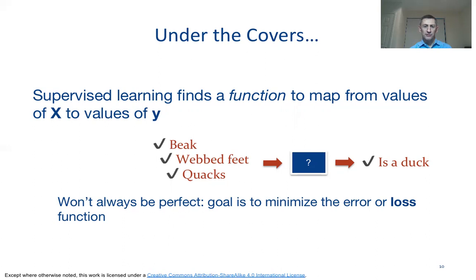Having a perfect function that will perfectly map our data features into output variables without making any mistake is challenging in practice. Typically, we will not be able to be perfect in this classification. Rather, we will define some sort of error function or loss function, and then try to find the mapping function which minimizes that loss or error as we do the predictions.